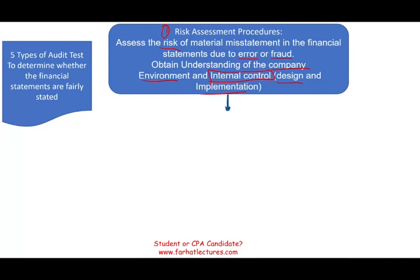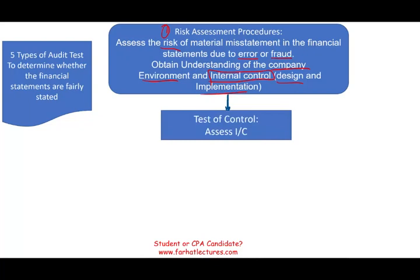After the risk assessment procedure, assuming we're going to rely on internal control, we test the internal control. The purpose is to assess the control risk for each transaction-related audit objective. This is step two. We have almost a whole chapter and about 12 recordings on internal control.